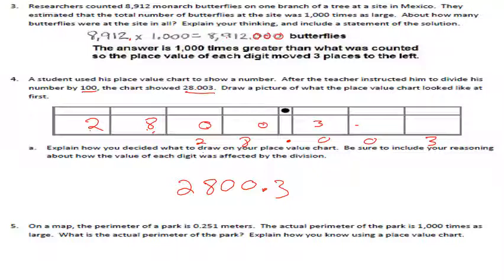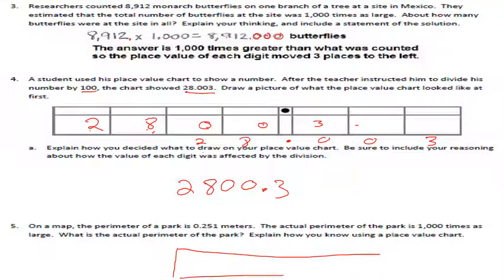Number five: on a map, the perimeter of a park is 0.251 thousandths meters. The actual perimeter of the park is 1,000 times as large. We need to explain using a place value chart. A perimeter is the total distance around the outside. Let's do a quick place value chart — we know it's 0.251 thousandths meters.